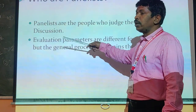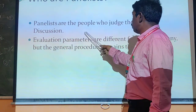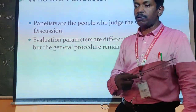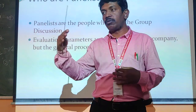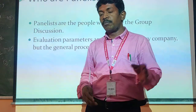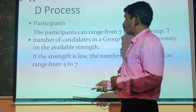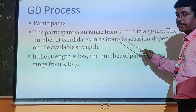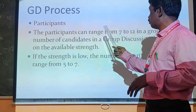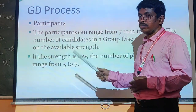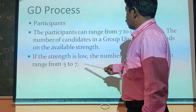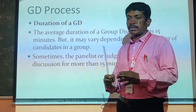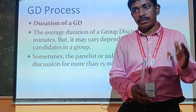Who are the panelists? Who will conduct this group discussion? These are the people who evaluate the group discussion. Evaluation parameters are different from company to company. There is no proper formal process — each company has its own rules. Based on the process, they will conduct group discussion. The participants can range from 7 to 12. In any group discussion, the average participants are from 7 to 12 in a group. If the strength is low, the number can range from 5 to 7 also.